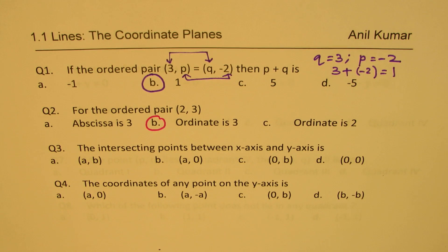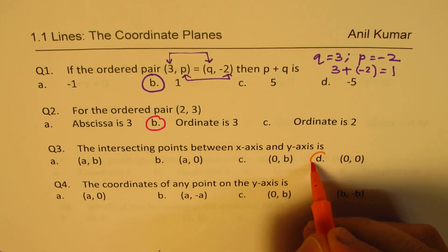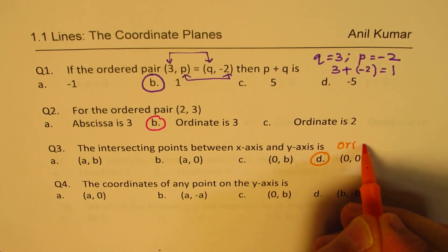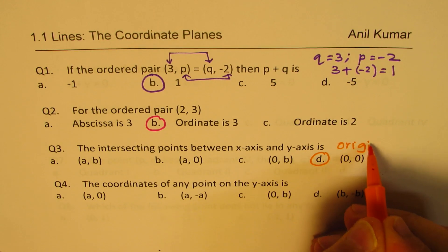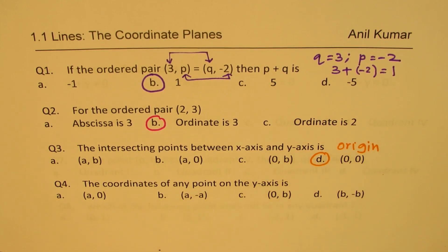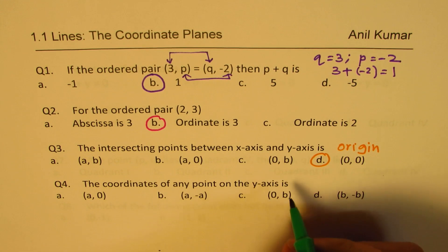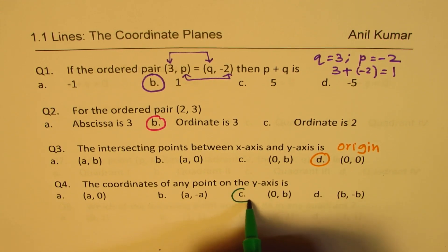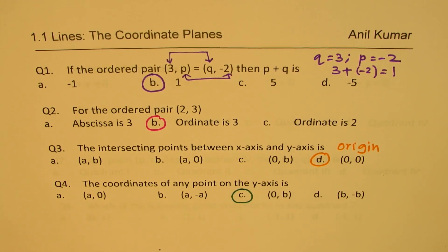Question 3: The intersection point between the x-axis and y-axis is always the origin, so (0, 0) is the right answer. Question 4: The coordinates of any point on the y-axis — the x value has to be zero, so option C is the right option.